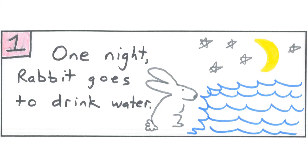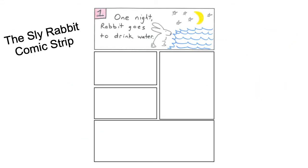Once you have your blocks numbered, we can get started making our comic strip. In my first block, I decided to draw the rabbit, the water, the stars, and the moon. I wrote, one night rabbit goes to drink water.